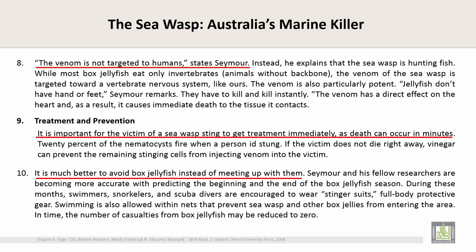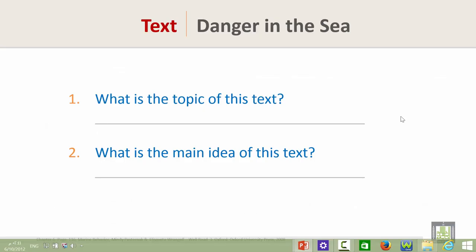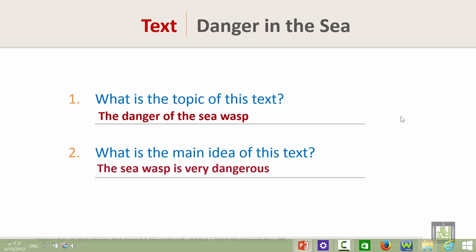Now read the last sentence of the text. The last sentence is: 'In time, the number of casualties from box jellyfish may be reduced to zero.' Now answer these questions. The topic of this text is the danger of the sea wasp. The main idea of this text is: the sea wasp is very dangerous. This is the end of this lesson — thank you.